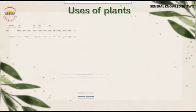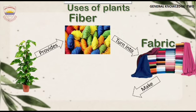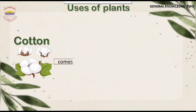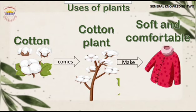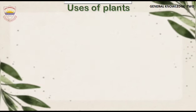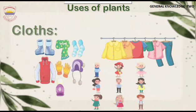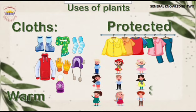Clothing. Plants give us fibers that can be turned into fabrics for making clothing. Cotton, for example, comes from the cotton plant and is used to make soft and comfortable clothes. Linen, made from flax plants, is another natural fabric used for clothing. Plants provide us with materials to keep us warm, protected, and stylish.